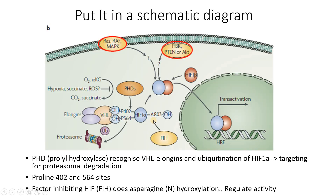Now let's put this in a schematic diagram. PHDs, or prolyl hydroxylase enzymes — oxygen recognizes the alpha-ketoglutarate and activates PHD. PHD finds the VHL complex, hydroxylates the proline residues, and also ubiquitinates HIF-1 alpha, therefore targeting it for proteasomal degradation. So we no longer have HIF-1 alpha available to bind with HIF-1 beta.